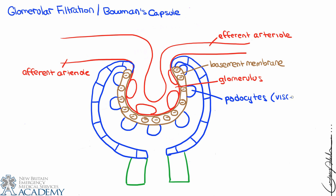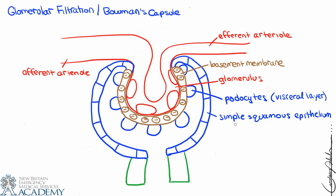The epithelial cells connected to the basement membrane are called podocytes, and they make up the visceral layer. Bowman's capsule has a visceral layer and a parietal layer, and similar to other serous membranes there is a layer of fluid in between them. The podocytes are located most closely to the glomerulus, and then there's a layer of simple squamous epithelium making up the parietal layer.